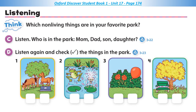Communicate. Listening. See and listen. Who is in the park? Mom, Dad, Son, Daughter. One. This park is great, Dad. Look at that big horse. It isn't a horse, Joe. It's a statue. Oh yes, a very big statue.